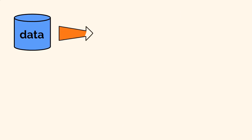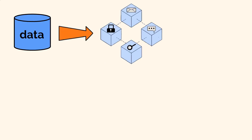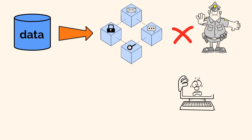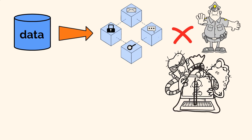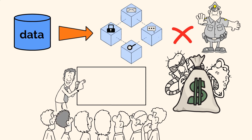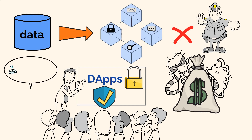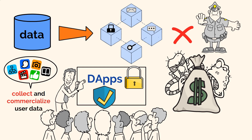A further benefit is that all the data used by dApps is stored on the blockchain. This data has no single custodian, and so it cannot be exploited by any person for financial gain. Because of this fact, dApps are inherently more secure and guarantee protection for all users. This is very different from centralized apps, where the owners of the applications collect and commercialize user data, often without a shred of consent.